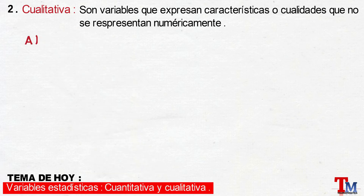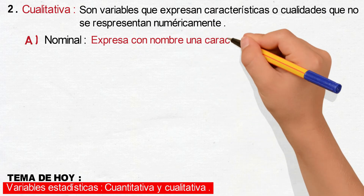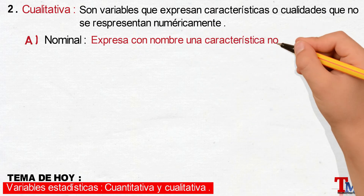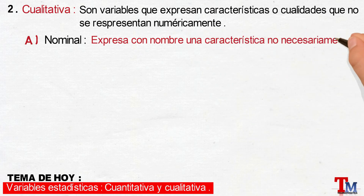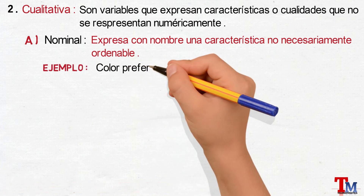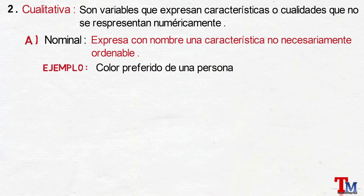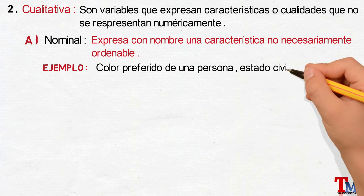Existe la variable cualitativa nominal, que se define como aquella que expresa con nombre una característica no necesariamente ordenable. Por ejemplo, el color preferido de una persona. También, su estado civil.